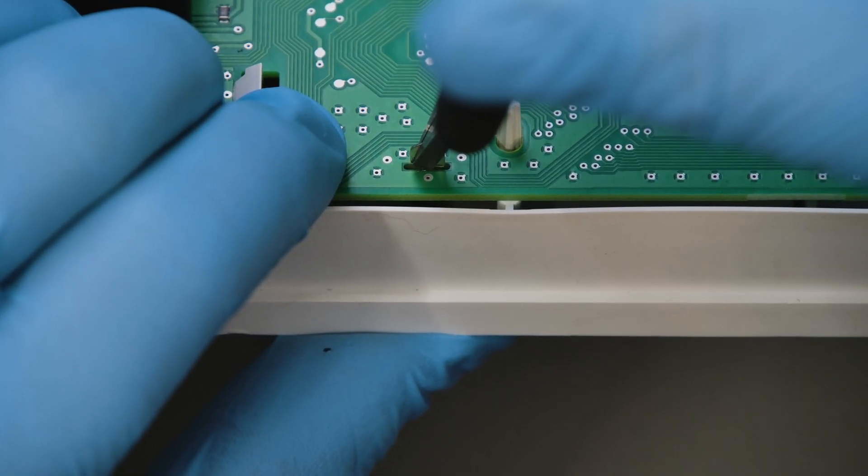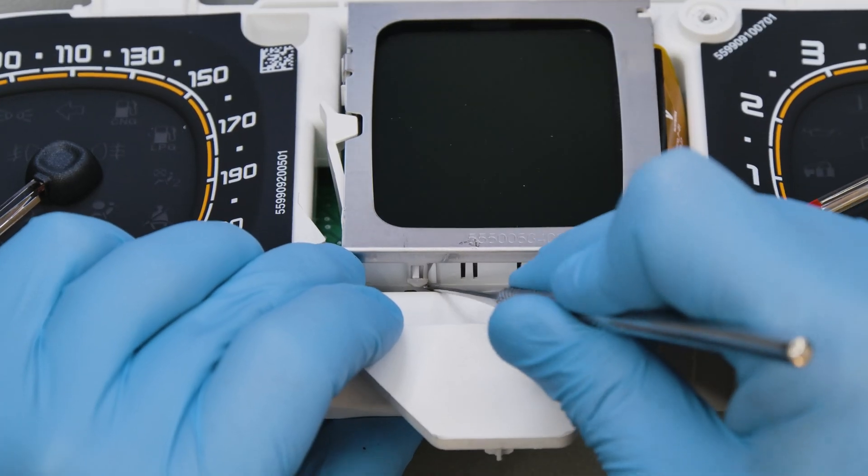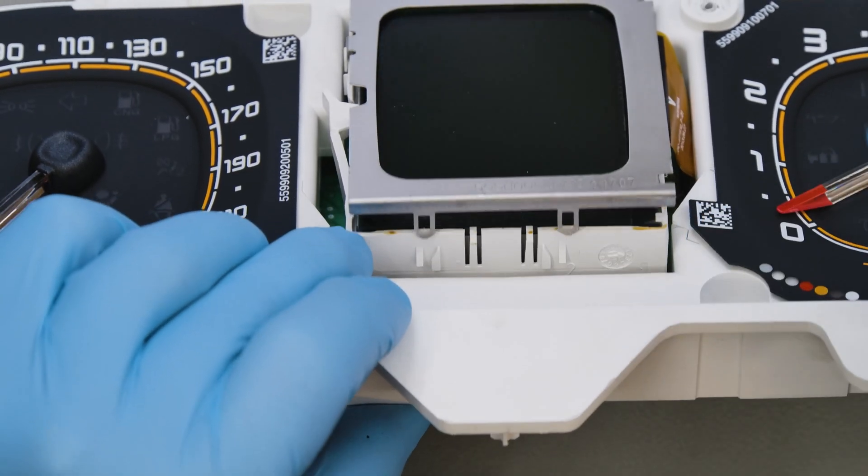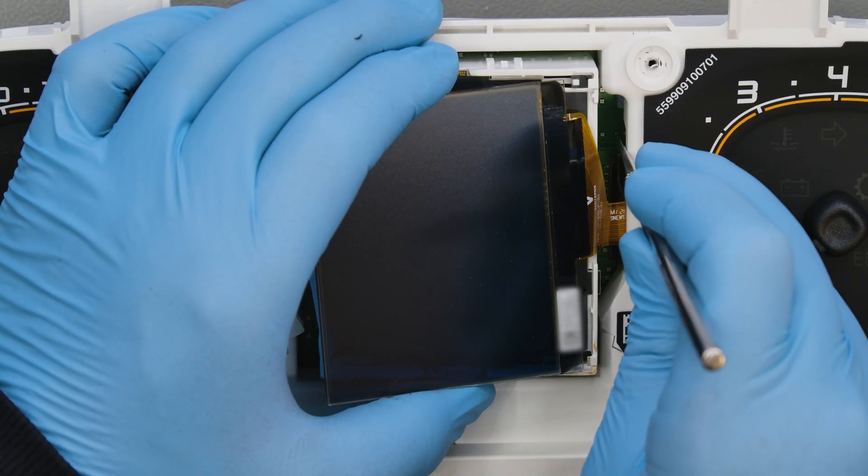With the pliers, rotate the clip of the metal frame of the display and remove it, unhooking the other clips with the Q-OP tip tool. Open the FPC connector and take out the display.